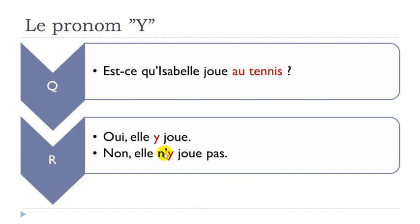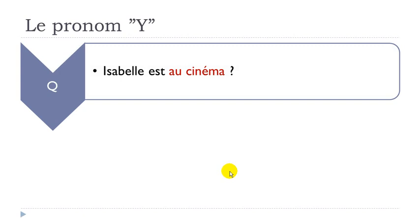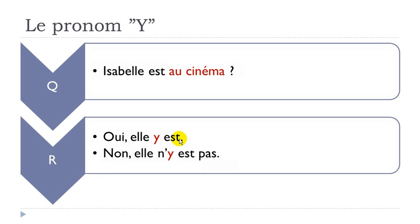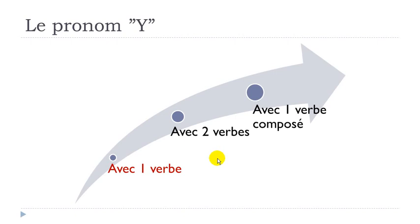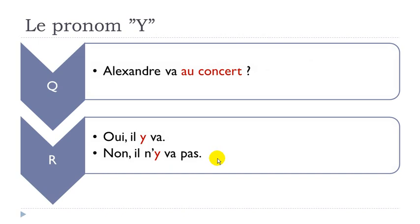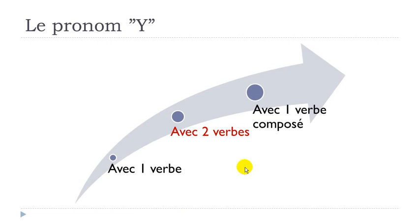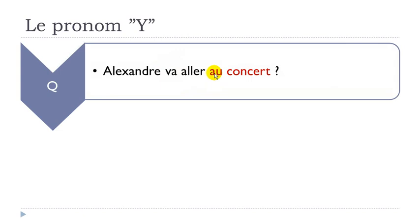You can answer ISABELLE VA EN FINLANDE by repeating everything, or avoid repeating Isabelle: ELLE VA EN FINLANDE, or avoid repeating both Isabelle and EN FINLANDE using Y: ELLE Y VA. Keep in mind Y is a pronoun and should come before the verb. If using a town name: ISABELLE VA À PARIS — OUI, ELLE VA À PARIS, then OUI, ELLE Y VA. And with a place like cinema: ISABELLE EST AU CINÉMA — OUI, ELLE EST AU CINÉMA, then OUI, ELLE Y EST.